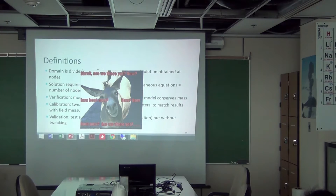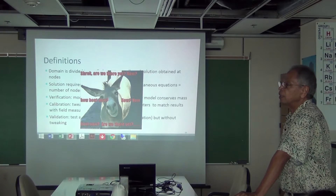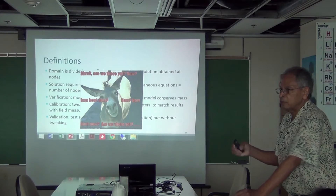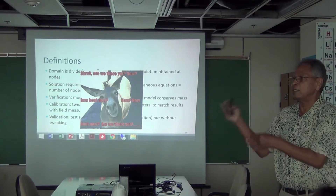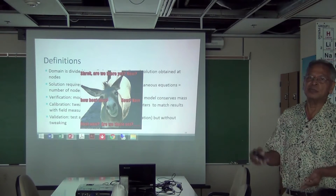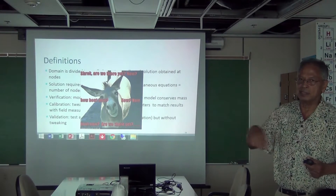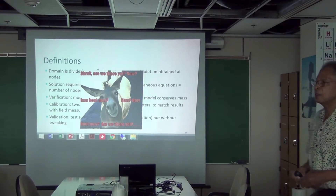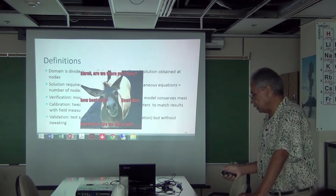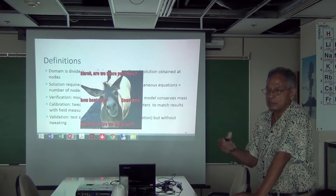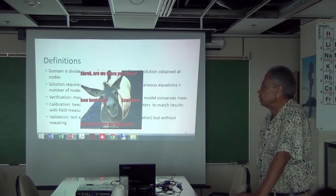Calibration is a very tedious process — you have to do it over and over again. Fortunately, there are automatic ways to do it: give the computer starting numbers and a range, and let the computer try until it gets the best match. But sometimes it doesn't work easily, so you have to combine manual and automatic calibration. You give the computer the best starting point, then the computer refines it.